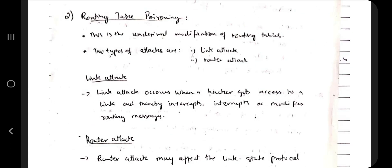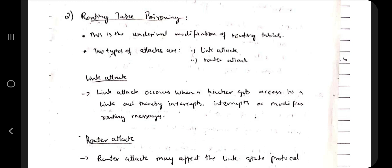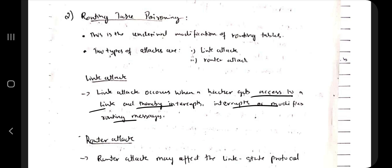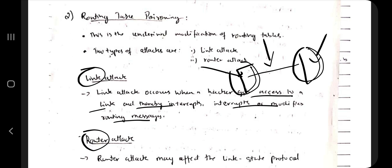The next type is routing table poisoning — the undesired modification of routing tables. Routing refers to the data link between two devices. There are two sub-types: link attack, where the hacker gets access to the link and intercepts and modifies routing messages; and router attack, where either the source or destination device gets attacked.